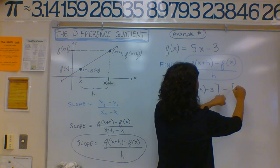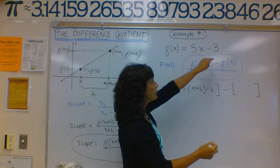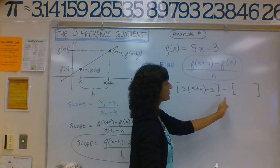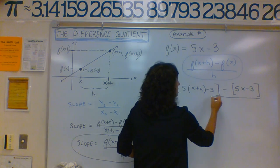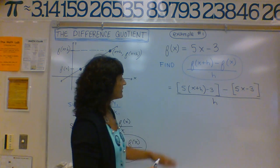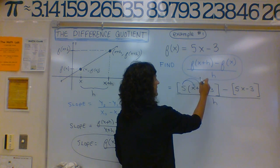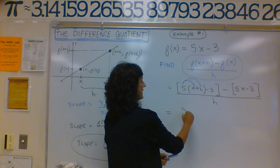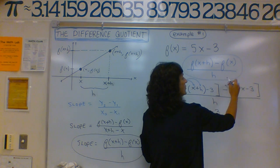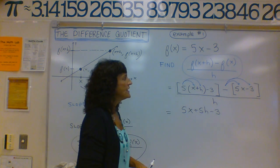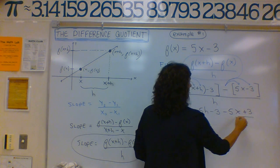From that, we're going to subtract the function. We bring down 5x minus 3, but we need grouping symbols since there are two terms, so we distribute the negative sign to each term. That gives us 5(x plus h) minus 3, minus (5x minus 3), all over h.